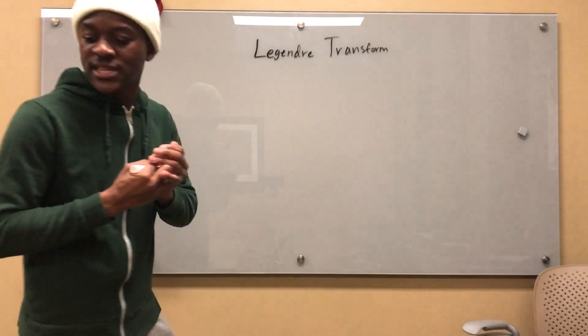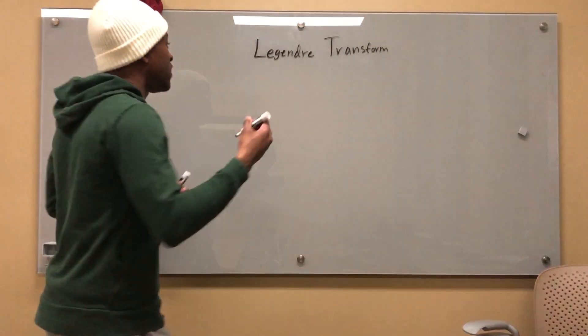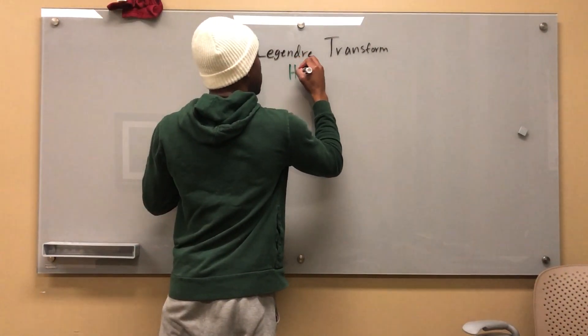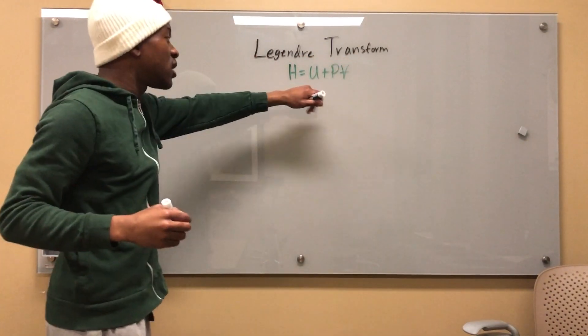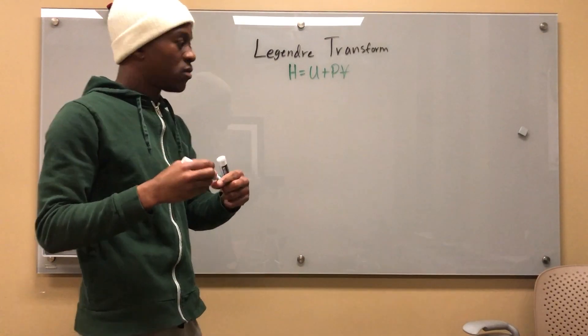I know that enthalpy is given by U plus PV, right? That's the formula for enthalpy. And enthalpy I'm going to call H, right? So that's internal energy plus pressure times volume.